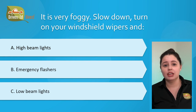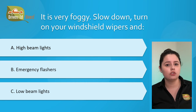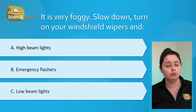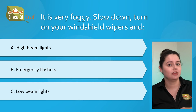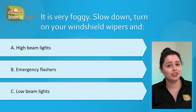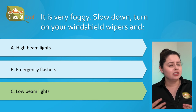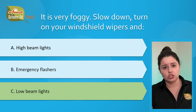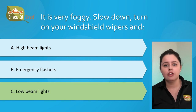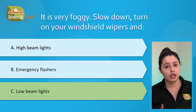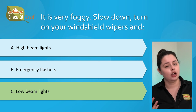Question number sixteen: it is very foggy. Slow down, turn on your windshield wipers, and: A) high beams, B) emergency flashers, or C) low beam lights. The correct answer is C, low beam lights. Ideally we don't want to drive in foggy conditions, but if you must, drive slowly and use your low beam lights. High beam lights will reflect back and cause a glare.